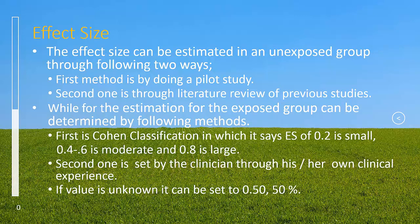Effect size in an exposed group can be determined by following three ways. First one is Cohen classification in which it says effect size of 0.2 is small, 0.4 to 0.6 is moderate and 0.8 is large.